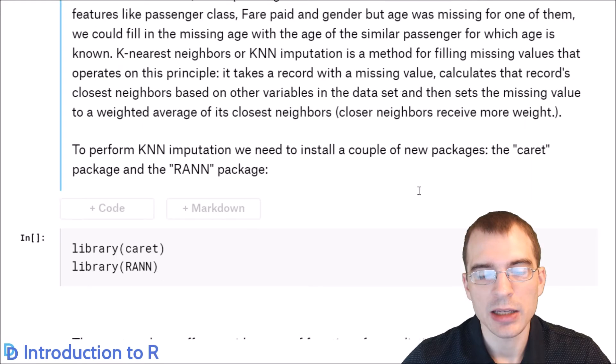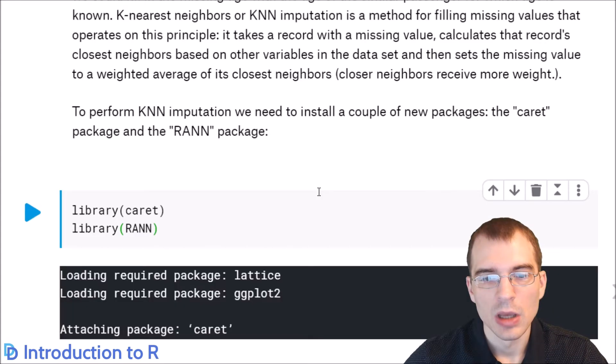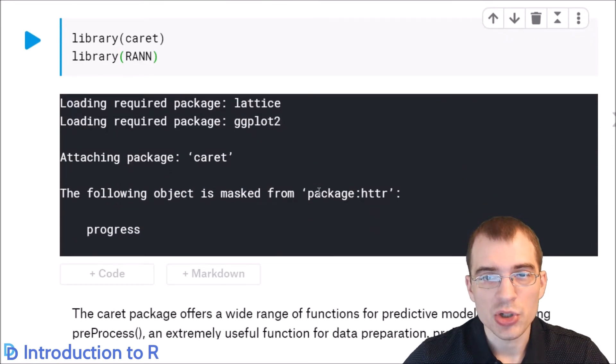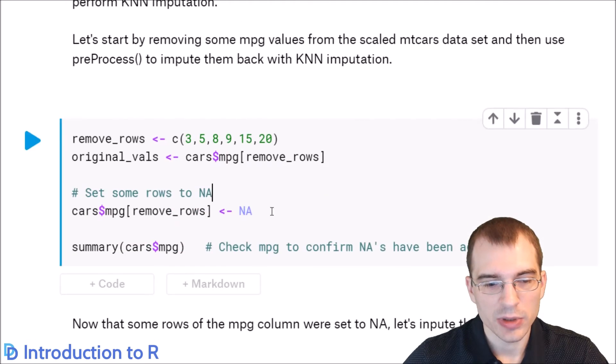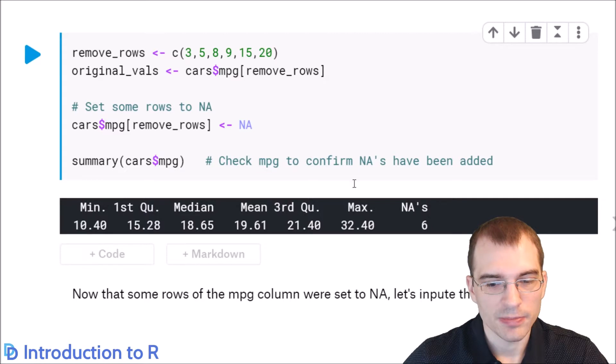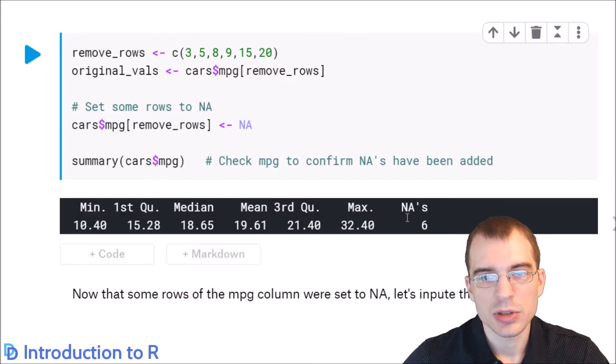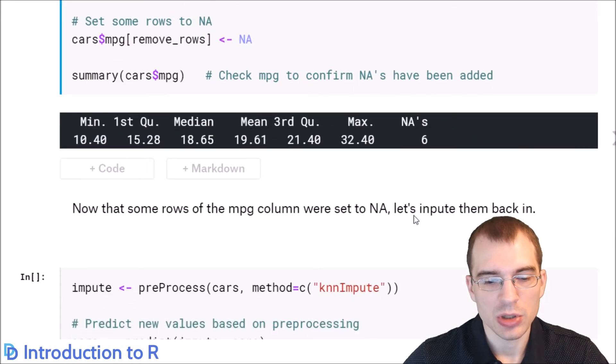First, we're going to load in a k-nearest-neighbors library. In this case, we'll use caret and rann. We'll load those in. Next, we're going to introduce some missing values into our cars data set. I'll run that. And we can see that we've introduced six NA values into the MPG column. Finally, we're going to use the knn-impute method. That is part of the caret package's preprocessing options. We'll show how to do that here.